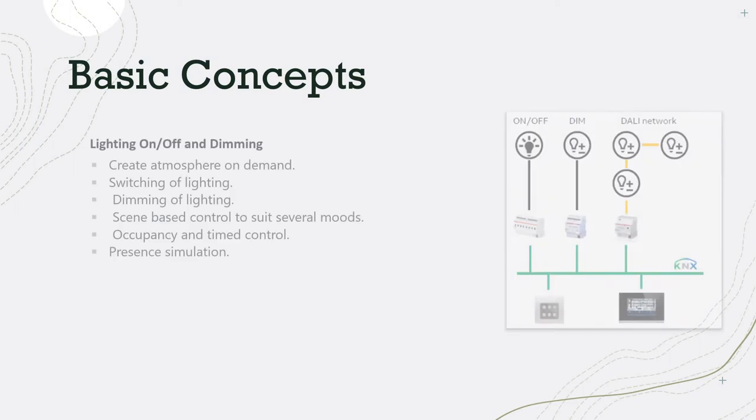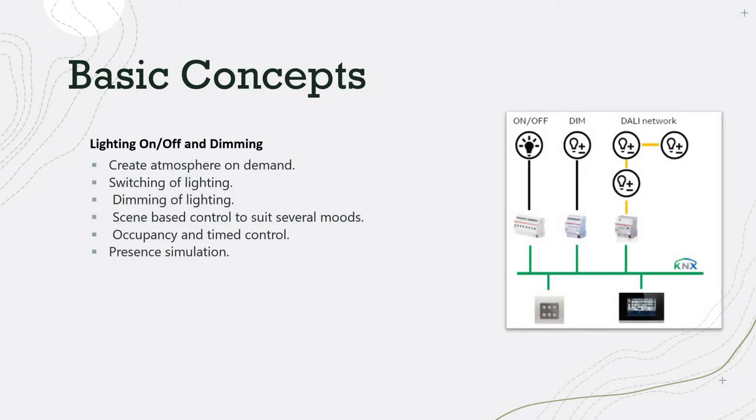Let's go over a basic concept about lighting control systems. Mainly, the lighting control system is used to create a nice atmosphere based on user demand. For example, you can turn on and off common lights in common areas, which is what happens nowadays, and dimming lights are mostly used in bedrooms and home theaters.